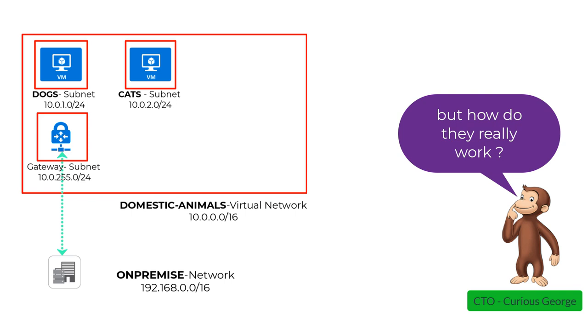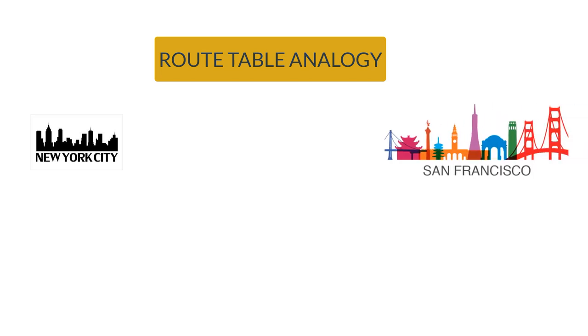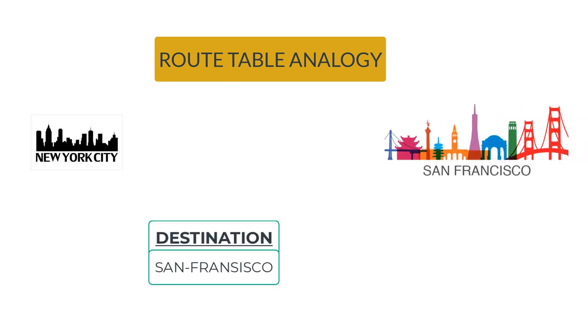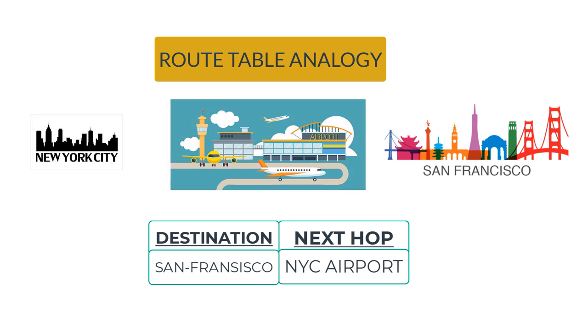All this happens because of routing. Before we jump into the specific route, let's understand with an analogy what a route table is and how it works. Let's say you are living in New York City and you wanted to get to California. The destination is California, and in order to get there, the first hop or the next hop would be the New York City John F. Kennedy Airport. We'll use this analogy of a destination and a next hop throughout this video for our Azure example.